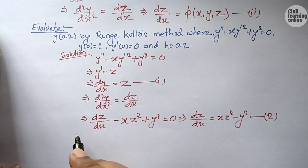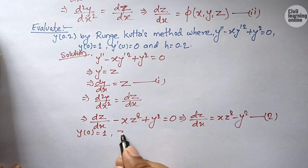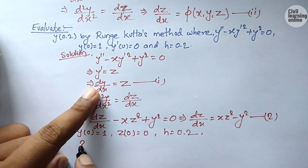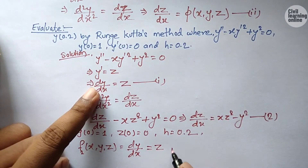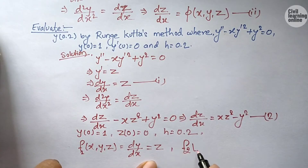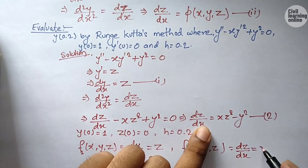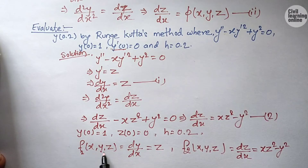We are provided with the conditions: y(x₀) = y₀ = 1, y'(0) means z₀ = 0, and h = 0.2. We also define f₁(x, y, z) = dy/dx = z, and f₂(x, y, z) = dz/dx = xz² - y². These two functions correspond to our two equations. Now let us find k₁, l₁, k₂, l₂ using these equations.